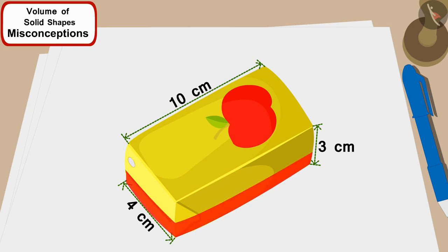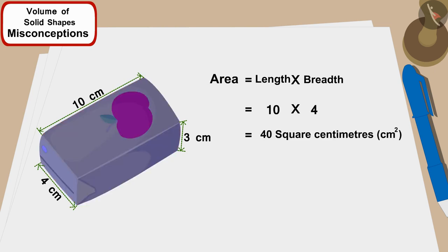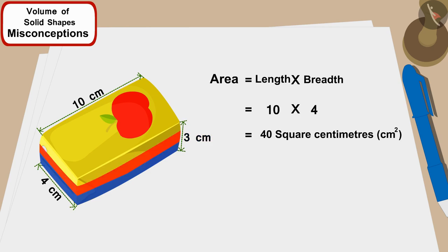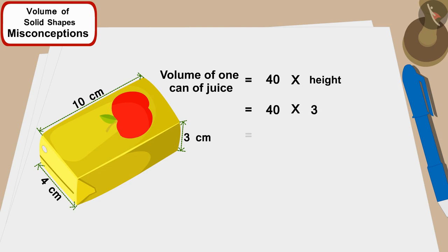Taru explained: 'The bottom layer of each juice box — that is, the length times the width — is 10 times 4, which equals 40 square centimeters. Because the height of the box is 3 centimeters, there will be three such layers. This means the volume of one juice box will be 40 multiplied by 3, that is 120 cubic centimeters.'